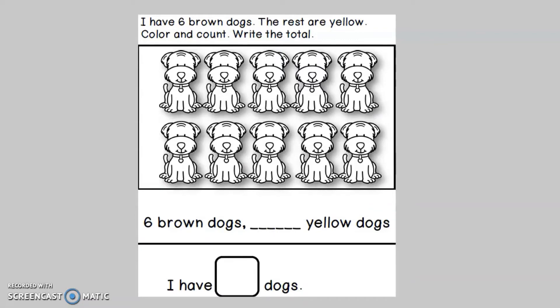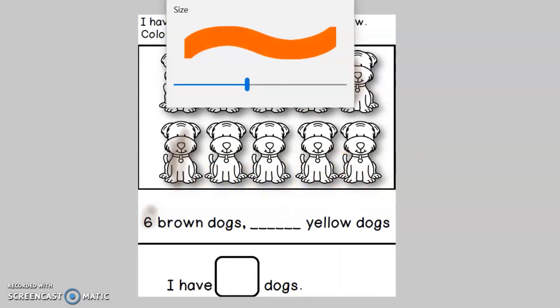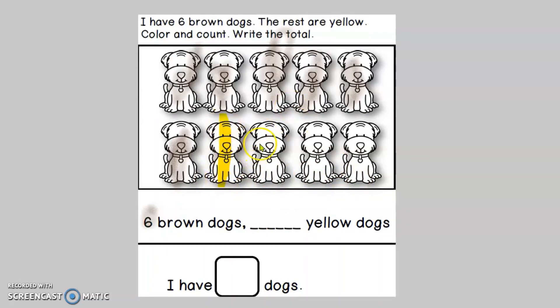You learned how to solve problems like this one. I have six brown dogs. The rest are yellow. Color and count. Write the total. One, two, three, four, five, six. Six brown dogs. How many will be yellow? Let's color the rest. One, two, three, four.